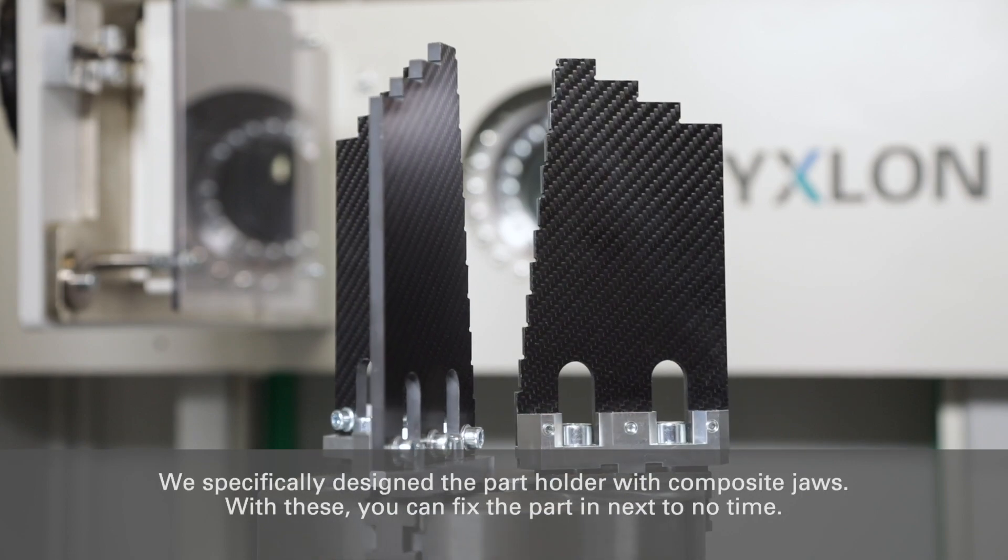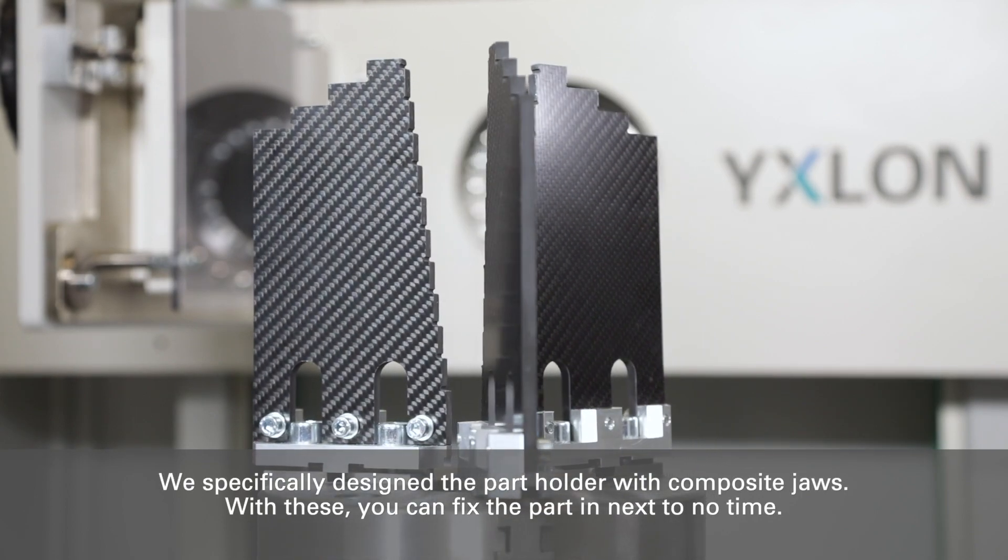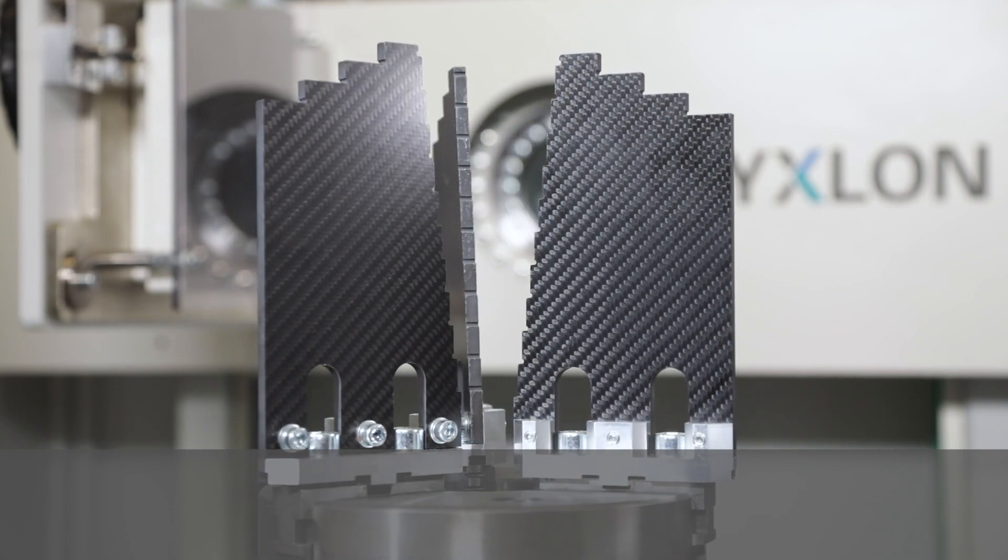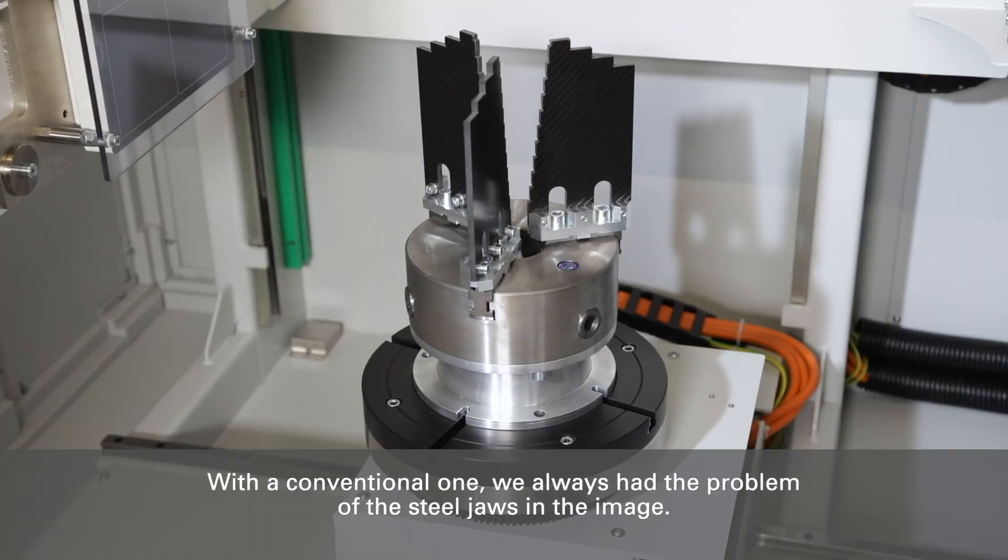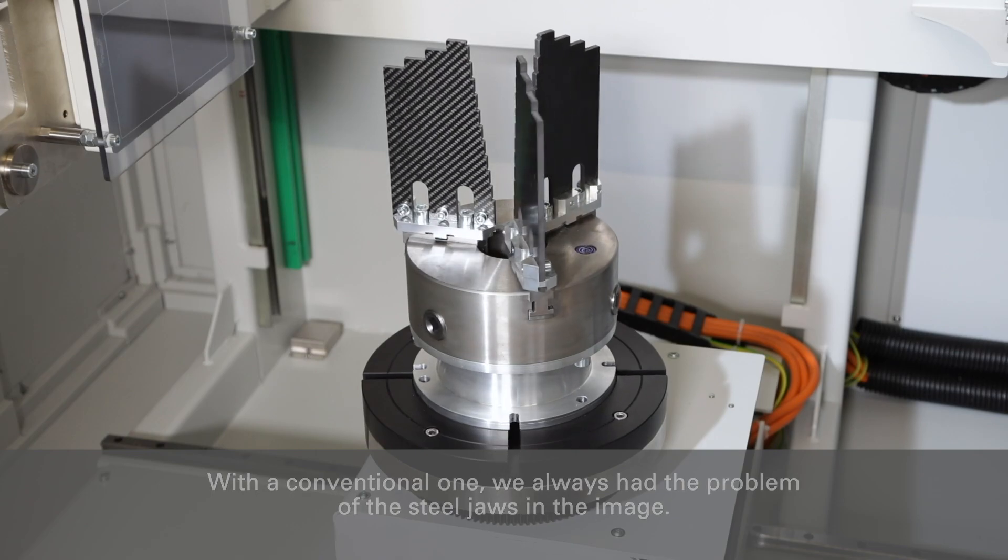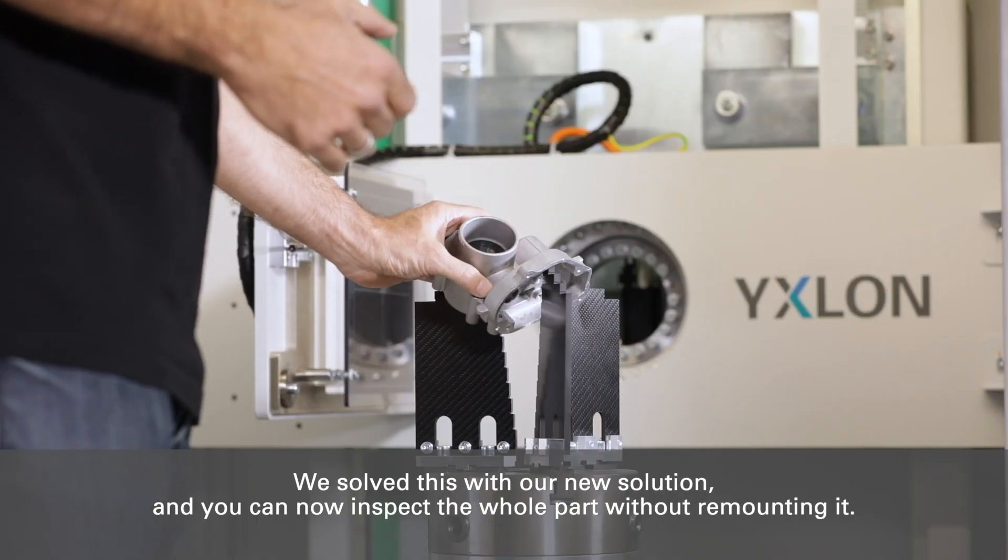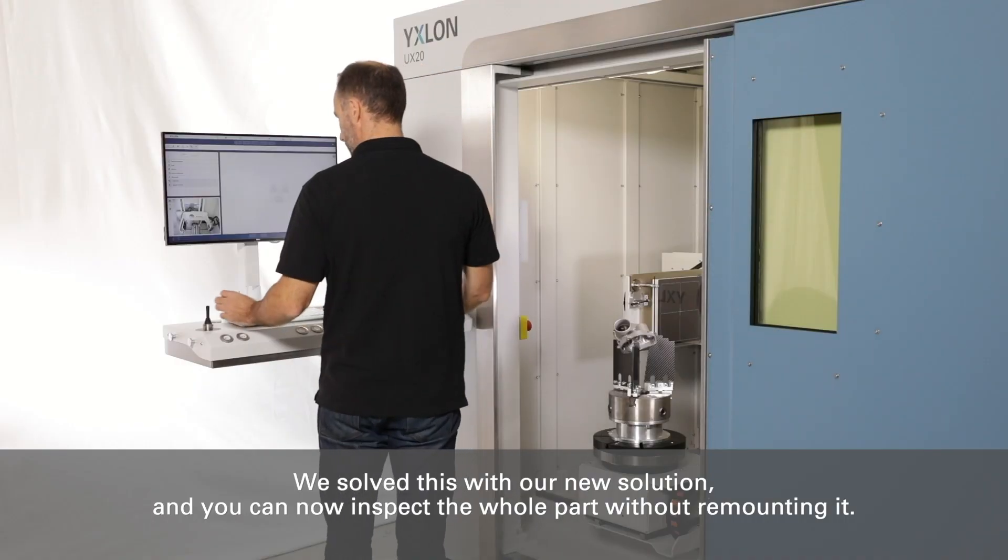We specifically designed the part holder with composite jaws. With these you can fix the part in next to no time. With a conventional one we always had the problem of the steel jaws in the image. We solved this with our new solution and you can now inspect the whole part without remounting it.